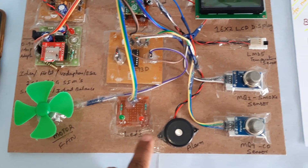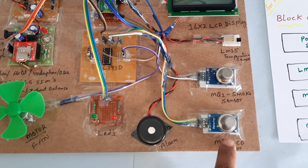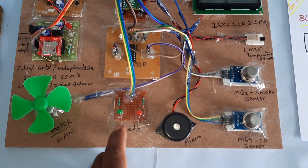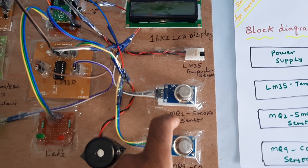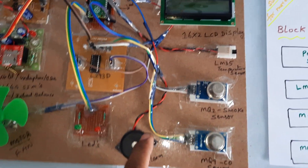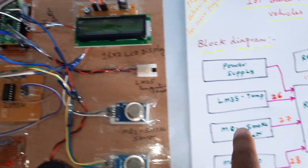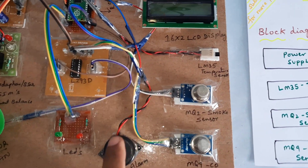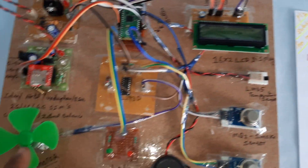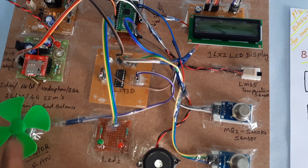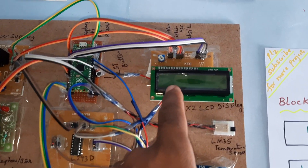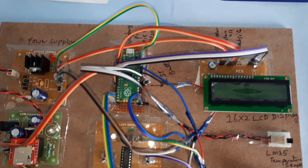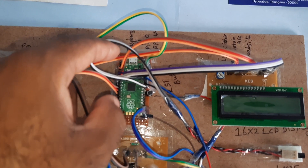We are using two LEDs: if the CO sensor reading is high, the red LED turns on; if the CO sensor reading is low, the green LED turns on. The MQ2 smoke sensor is connected to pin 27, and whenever smoke is detected, the alarm turns on. If temperature is high, the cooling fan speed is controlled according to the temperature using PWM technique. The 16x2 LCD character display shows whatever process is currently running.